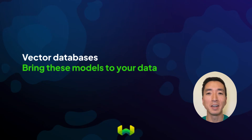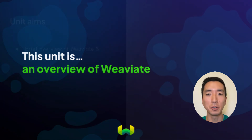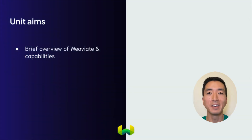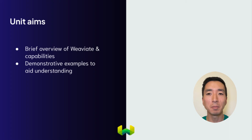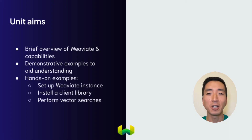This unit is designed to get us started on this journey together. We'll introduce you to the fundamentals of Weaviate, starting with a brief overview of what it is and what it can do, as well as how it works. We'll go through some demonstrative examples to help you concretely understand these ideas. And in just a short time, you'll be getting hands-on with Weaviate. We'll do this by going through the process of setting up your own vector database with Weaviate, installing a client library, and performing vector searches yourself.